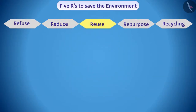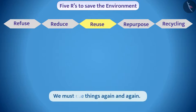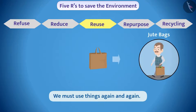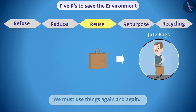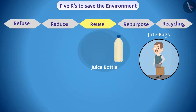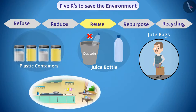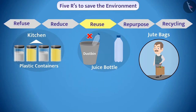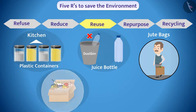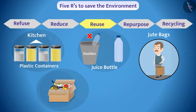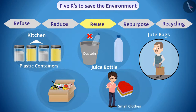Reuse. We must use things again and again. For example, a jute bag can be used repeatedly to carry things. Instead of throwing away a juice bottle, we can use it to store water. Plastic containers can be used to keep things in the kitchen. You can also use boxes used in packaging to store things. Those clothes which do not fit us can be given to the needy.